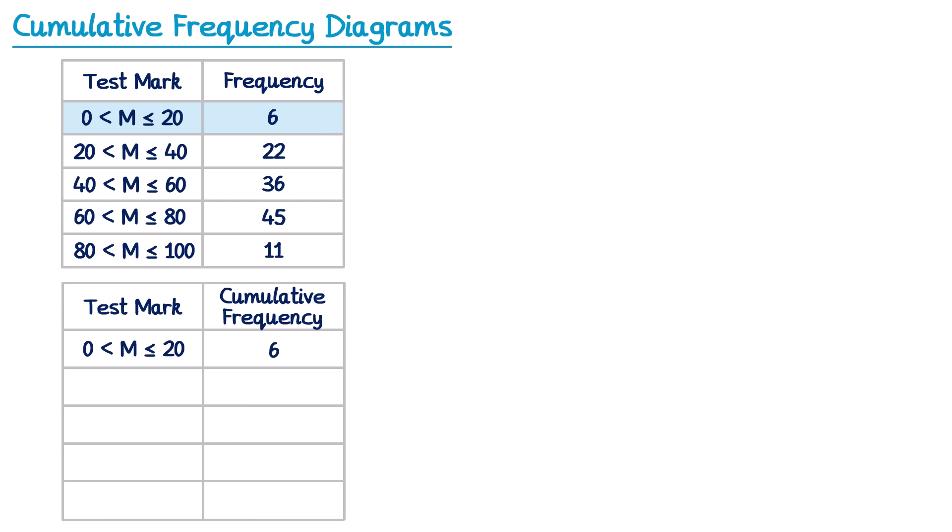But here's where it changes. We're now going to look at the next entry — marks from 20 to 40 with a frequency of 22. Because this frequency is cumulative we're going to include all of the previous frequencies as well, meaning we want all people from the first and second groups. So the marks now go from 0 to 40, and we add together both frequencies: 6 plus 22 gives a cumulative frequency of 28.